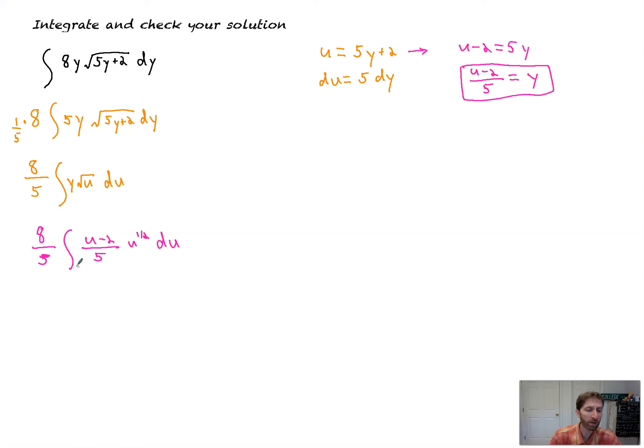So, now, I'm going to pull out this 1 fifth. There's a 1 fifth here. So, I'll get 8 over 25. Again, I took this 1 fifth out, multiplied it by that fifth, and got 20 fifths. Now, I've got u minus 2 times u to the 1 half. Look what's going to happen. It's not quite yet ready, but I'm going to distribute to each part.